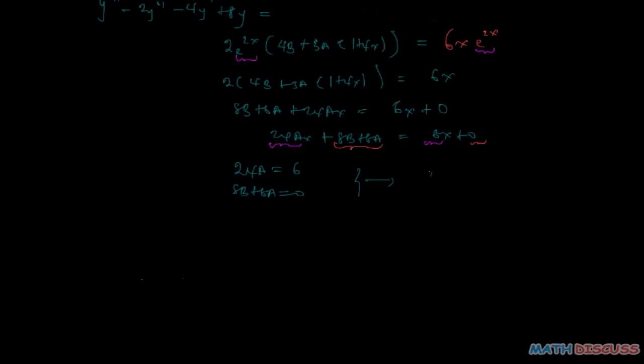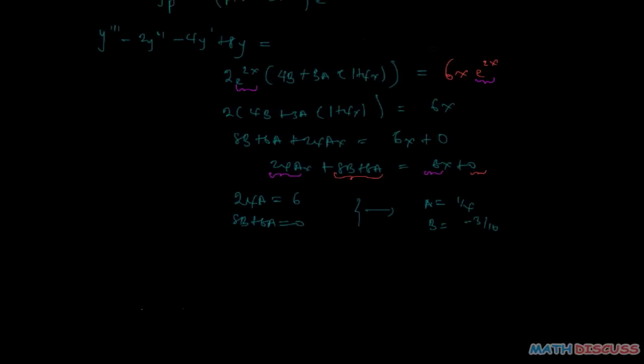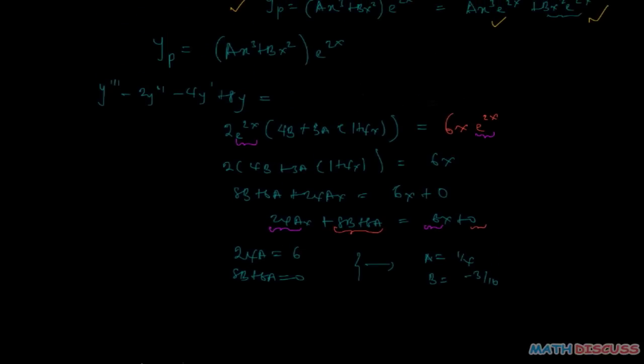So we have got a to be equal to 1 over 4 and b to be equal to minus 3 over 16. And so therefore our yp now, which is the yp I want to find, yp equals our a which is 1 over 4, 1 over 4 x cubed plus b, that is minus 3 over 16 x squared, e to the power of 2x.